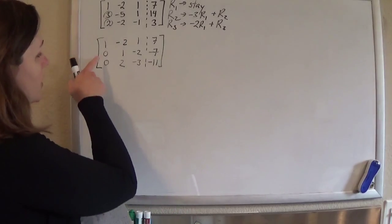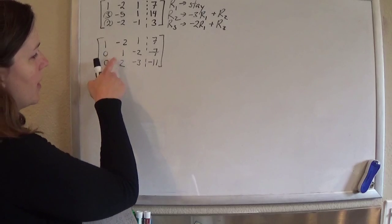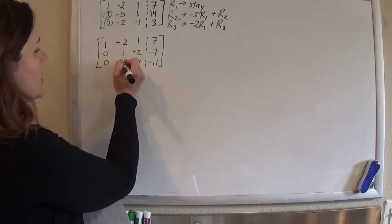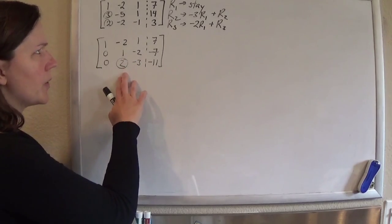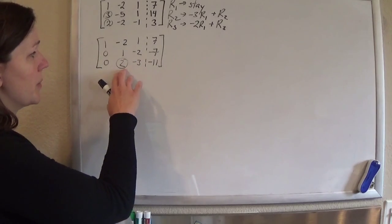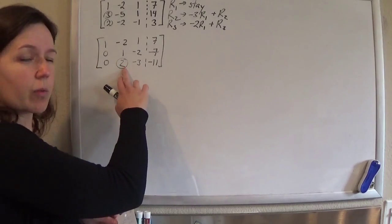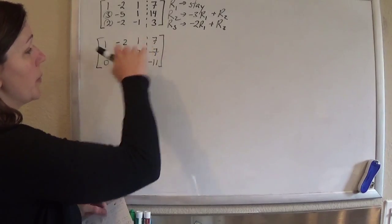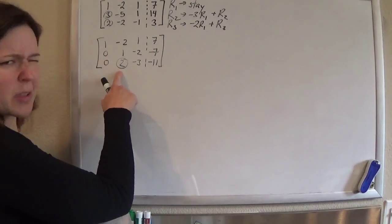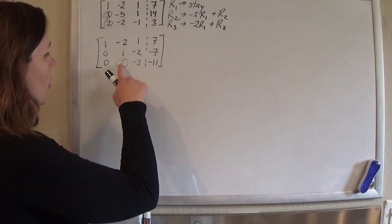So now that we have 0's in column 1, we want to get 0's in column 2. And if you want to go for just Gaussian elimination, just this 0 will do. If you want to do the full Gauss-Jordan, you could get both of those to be 0. I'm just going to go for this one and yank it out of the matrix as soon as I can.